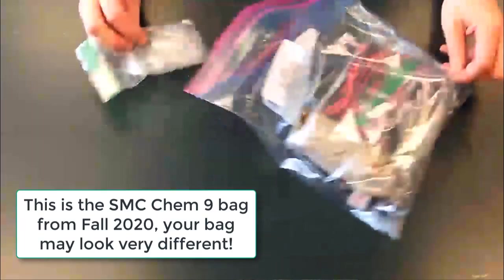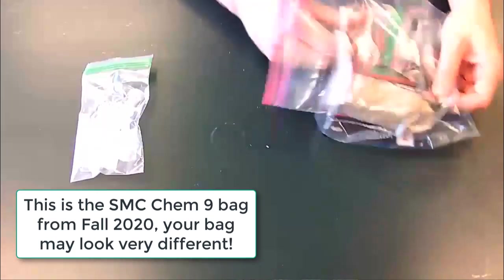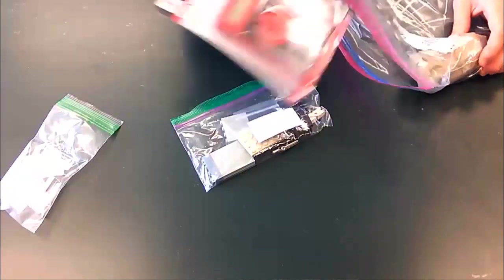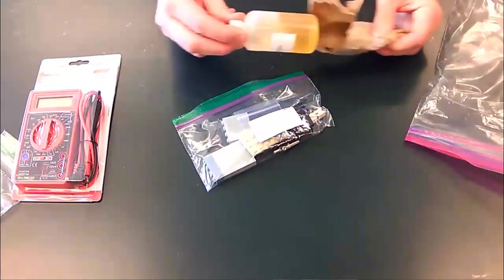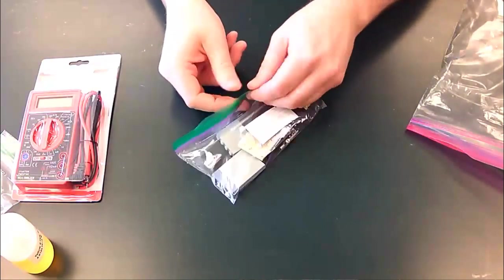So the first thing you want to do is open up the bag. In here we have the cuvettes, which we'll use for putting our samples in later. We have the Legos and electronic bits, which we're going to start with first. We have the multimeter. And we have the dye solution.